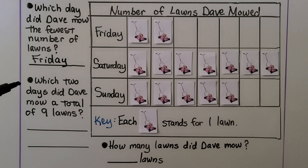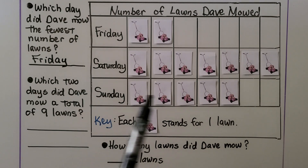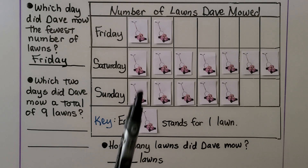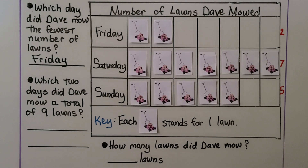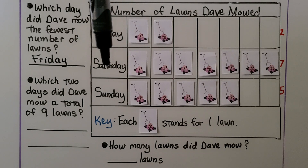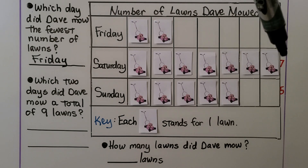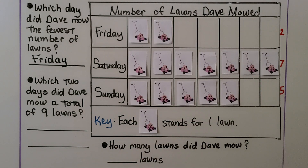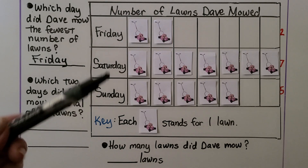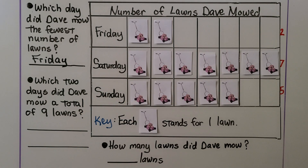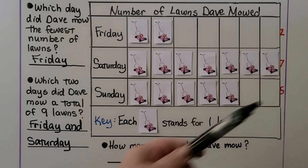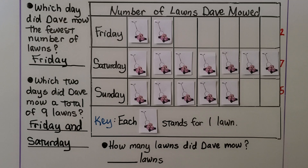This question asks: which two days did Dave mow a total of nine lawns? One way to help is to write the total number at the end of each row. Friday has two, Saturday has seven, and Sunday has five. Which two of these equal nine? Two plus seven is nine, so it would be Friday and Saturday. It wouldn't be two and five — that's only seven — and it wouldn't be seven and five — that's twelve. The only days that total nine are Friday and Saturday.